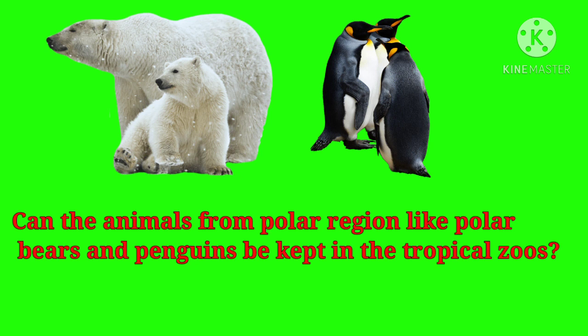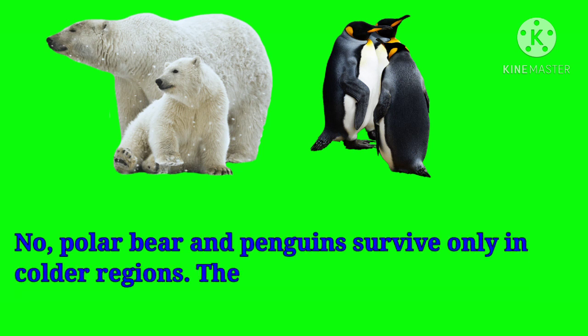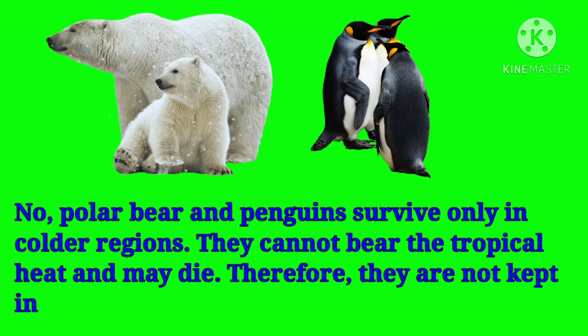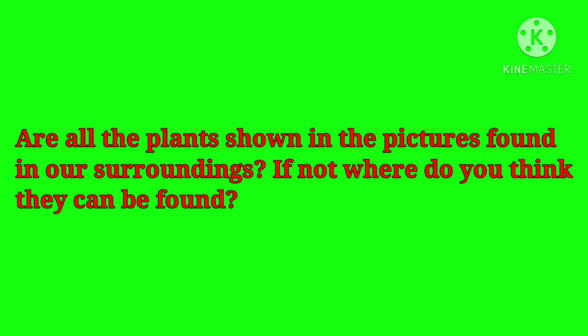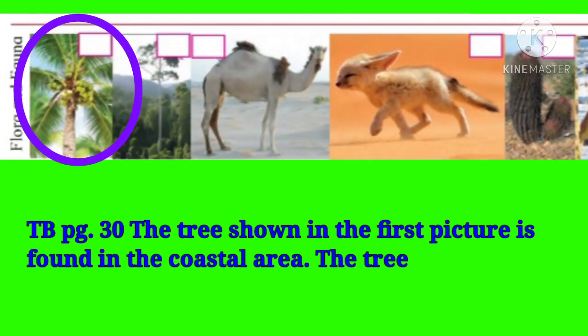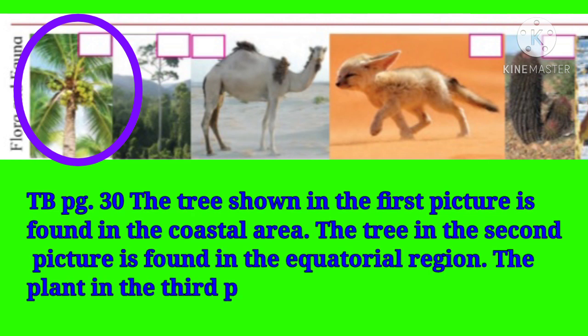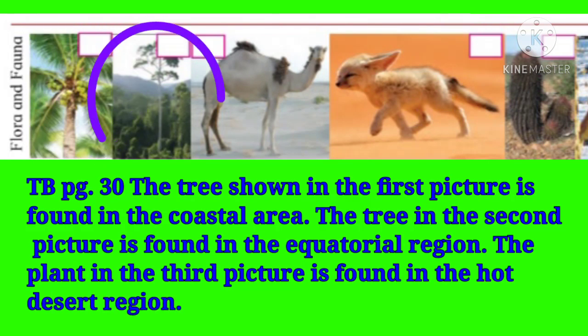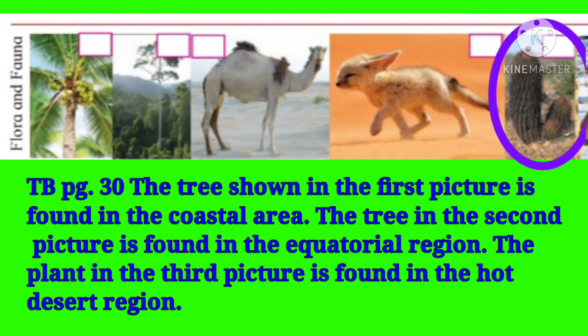Can animals from polar regions like polar bears and penguins be kept in tropical zoos? No — polar bears and penguins survive only in colder regions; they cannot bear the tropical heat and may die, so they are not kept in tropical zoos. Are all the plants shown in the pictures found in our surroundings? The tree in the first picture is found in the coastal area, the tree in the second picture is in the equatorial region, and the plant in the third picture is in the hot desert region.